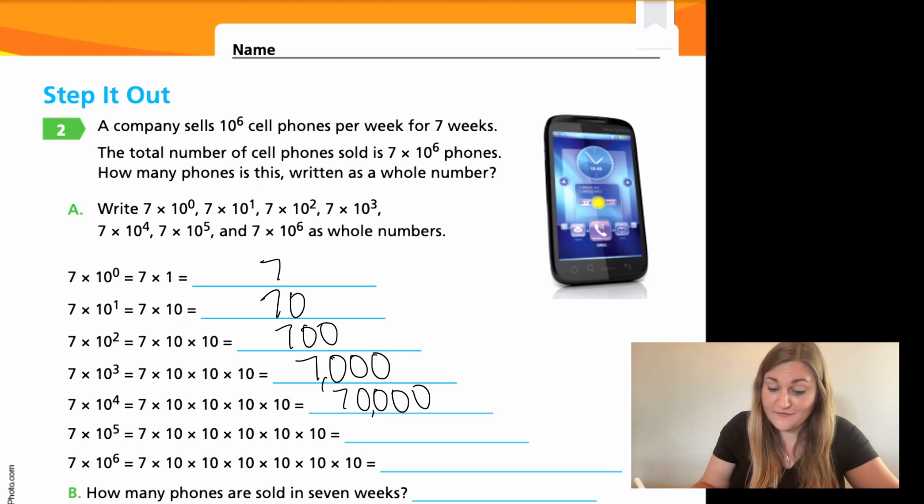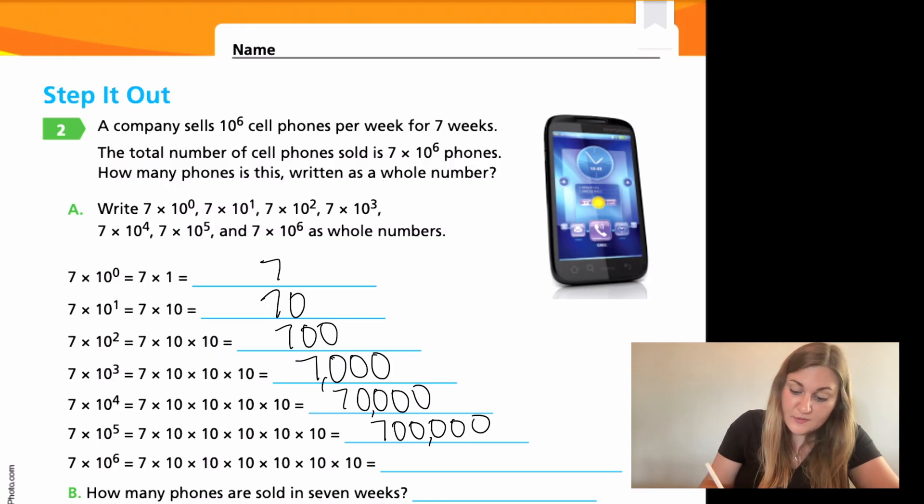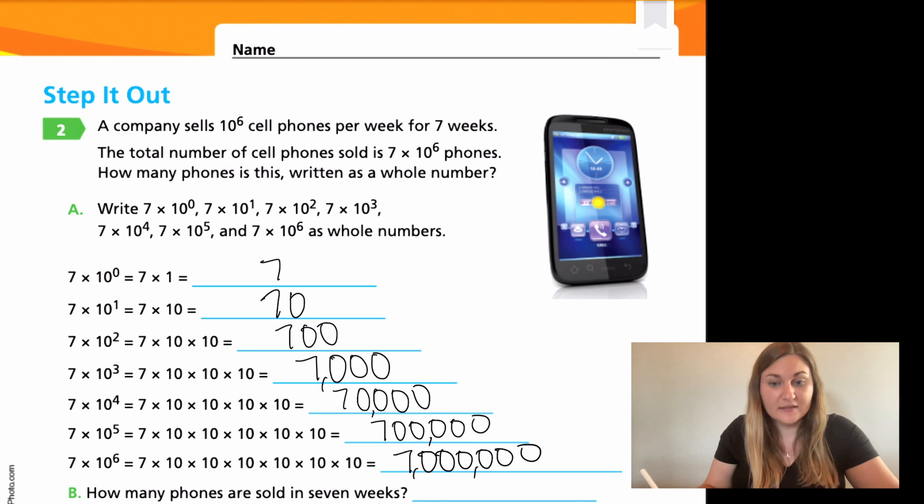Seven times 10 to the sixth, six tens, so six zeros. One, two, three, four, five, and six. Seven million. So how many phones are sold in seven weeks? I'm going to put seven million phones are sold.